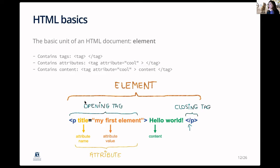I've made a little explanation diagram using the most simple element you find online, which defines a paragraph — the tag called P. This is the opening and closing of the tag P. The entire thing corresponds to the element. You've got your attributes, your content, your attribute name — here it's 'title' — and your attribute value — 'my first element'. That's the really basic structure you need to understand.